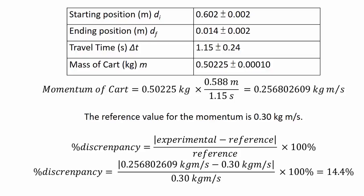So here I have some mock data and I've worked out the final answer. I've made up some random reference value that we can use to compare. And so we go through our discrepancy calculation and we finally end up with 14.4%. So is this good, is this bad?